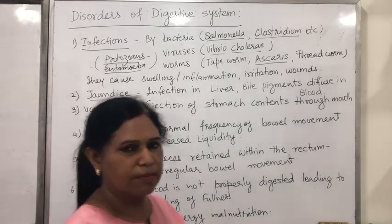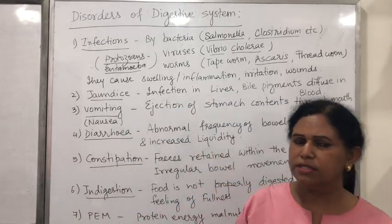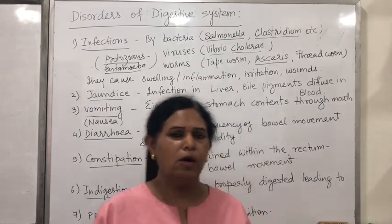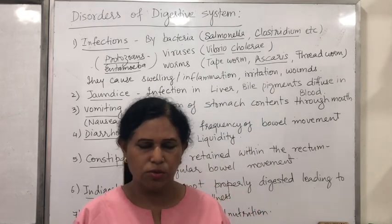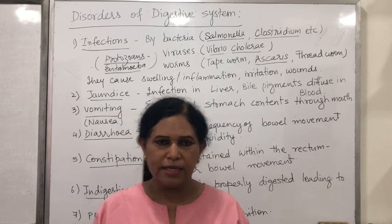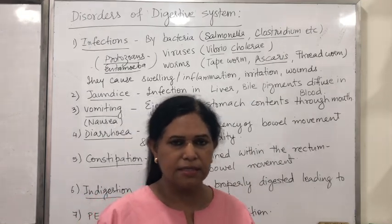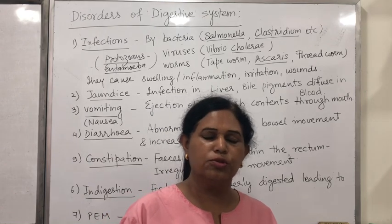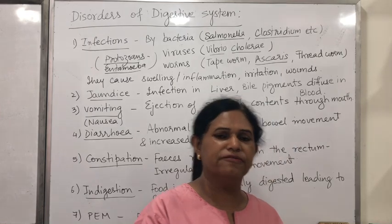Apart from this, there could be a problem called PEM — Protein Energy Malnutrition. This occurs because of a severe deficiency of protein, or severe deficiency of both protein and energy, in young children from 0 to 5 years of age. There are two types: marasmus, which occurs in children from 0 to 3 years of age, and kwashiorkor, in slightly older children up to about 5 years of age.